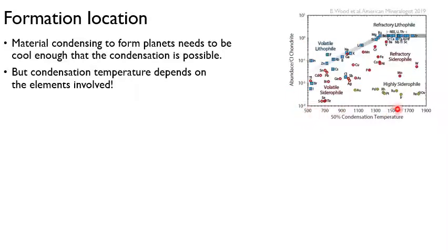All you need to pay attention to here is you see these different chemical elements. For instance, bismuth, you have silver, phosphorus, nickel. The condensation temperature depends heavily on what type of element you have.